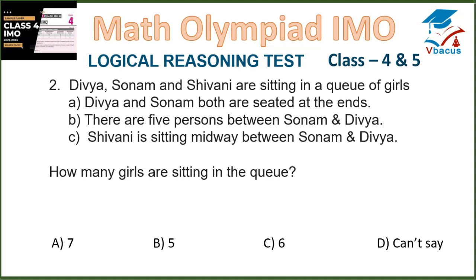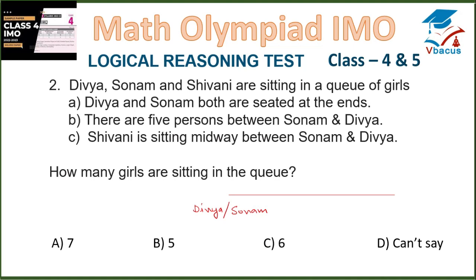Question 2. Divya, Sonam and Shivani are sitting in a queue of girls. Divya and Sonam both are seated at the ends. Suppose Sonam is sitting at the first end and Divya is sitting at the second end. There are 5 persons between Sonam and Divya.